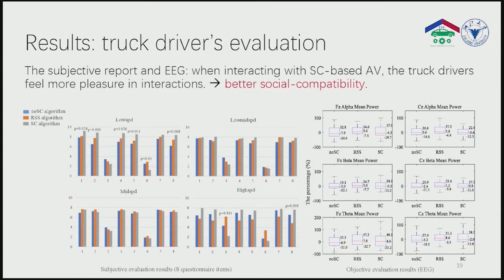We analyzed the subjects' EEG data and questionnaires. It is found that when interacting with AVs with the proposed algorithm, the human drivers report better subjective evaluation scores than with benchmark algorithms. The EEG data of human drivers also implies that the subjects feel more pleasure in interactions. That is to say, our proposed decision-making algorithm has better social compatibility compared with the benchmark algorithms.